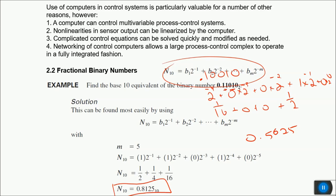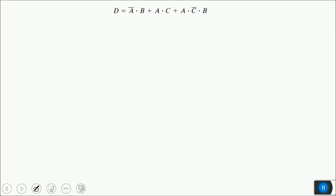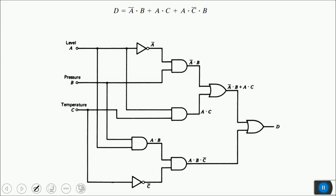Moving on with basic concepts, we have Boolean algebra and De Morgan's theorem. Combinational logic circuits are the start of digital conditioning circuits. For example, implementing an output D that should be 1 when the expression A·B̄ + AC + ĀCB is true can be done using NOT gates, AND gates, and OR gates.